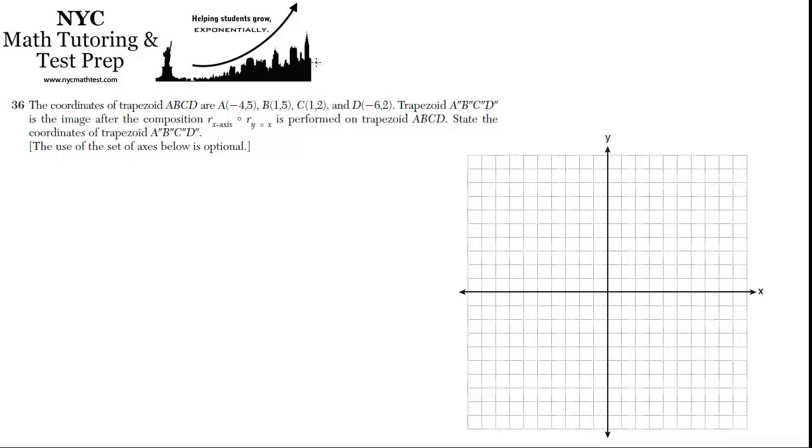The thing to remember about these compositions is it's like doing two transformations, but you don't go left to right like reading. You've got to do the reflection over the line y equals x first, and then do the reflection over the x-axis second. You really have to remember that, because if you do it the other way, it won't work out the same.